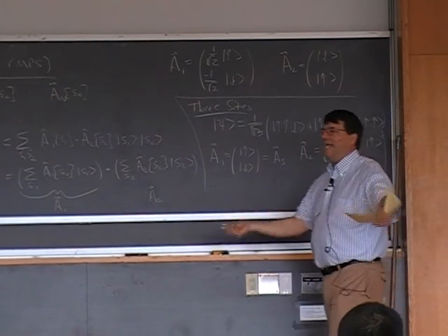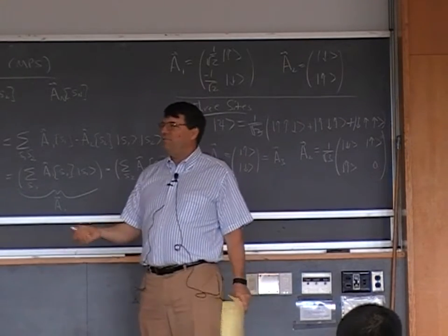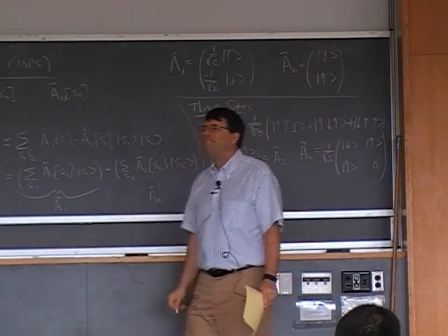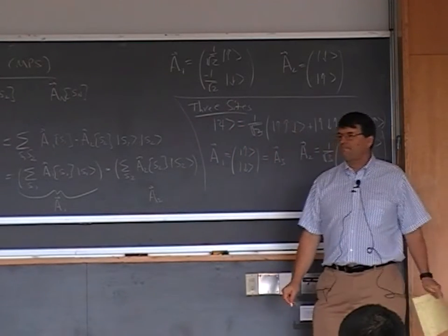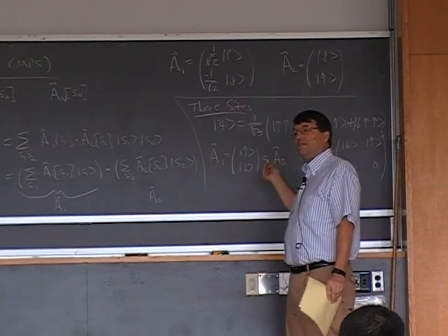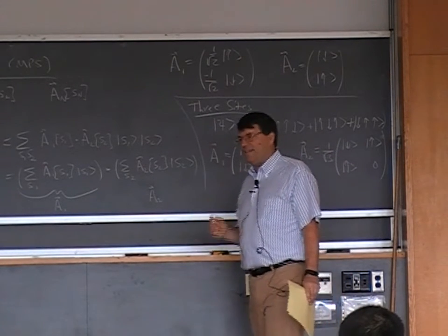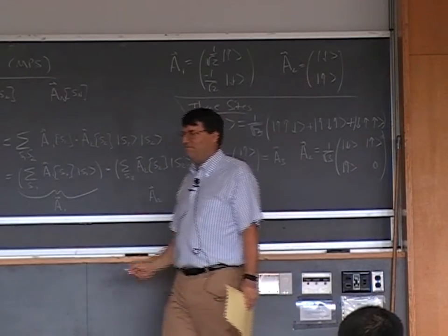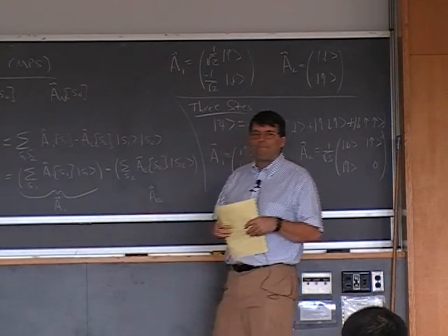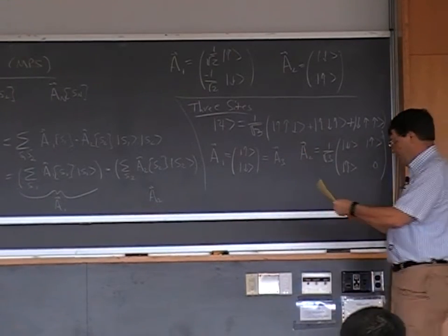If you go to eight sites, you might need matrices on the order of 2^4 by 2^4, or something like that. For states that are slightly larger, whether the matrix size actually grows depends on the specific state. The number of states needed is controlled by the entanglement, and for low-entanglement states it stays manageable.